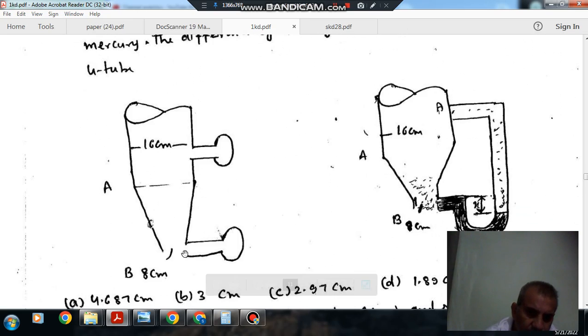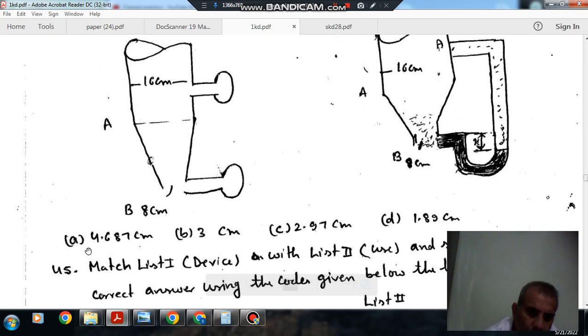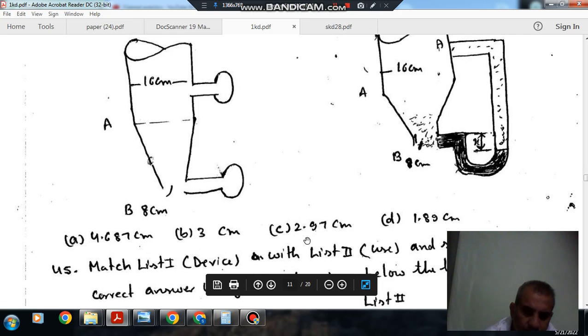The difference of level of mercury in the two limbs of the U-tube. This is 16 cm, this is 8 cm, this is B, this is A. Option A 4.687 cm, option B 3 cm, option C 2.97 cm, option D 1.89 cm.